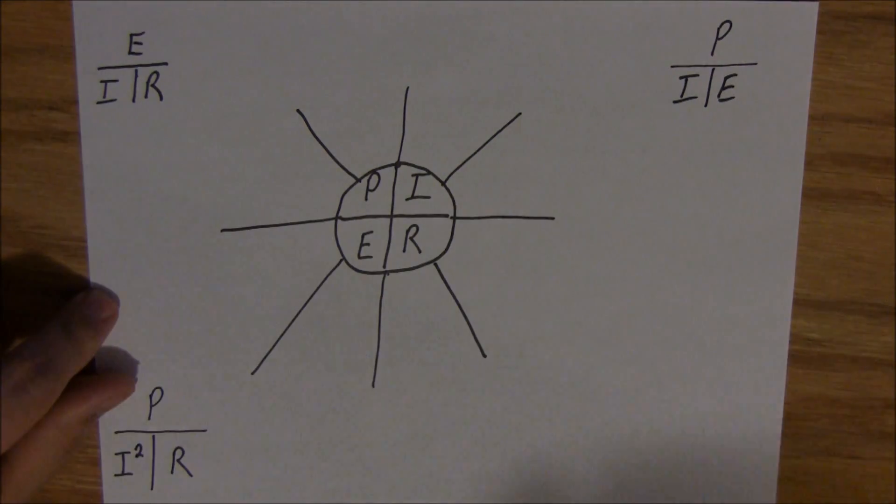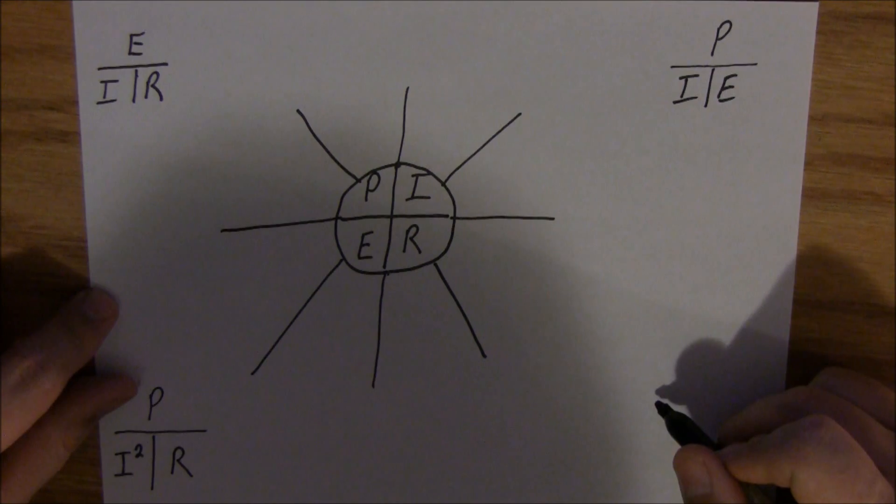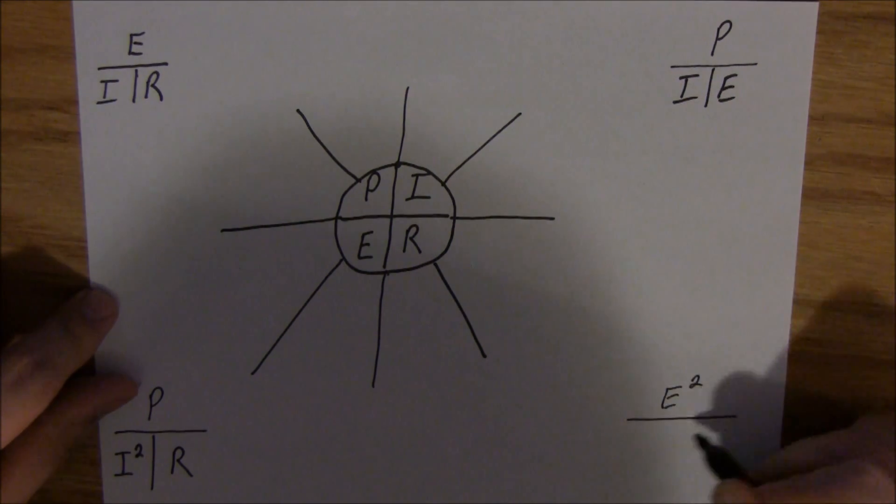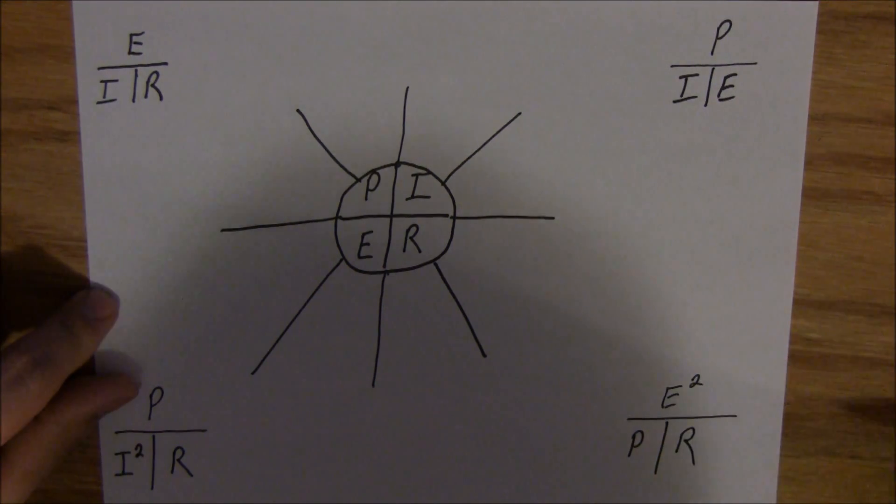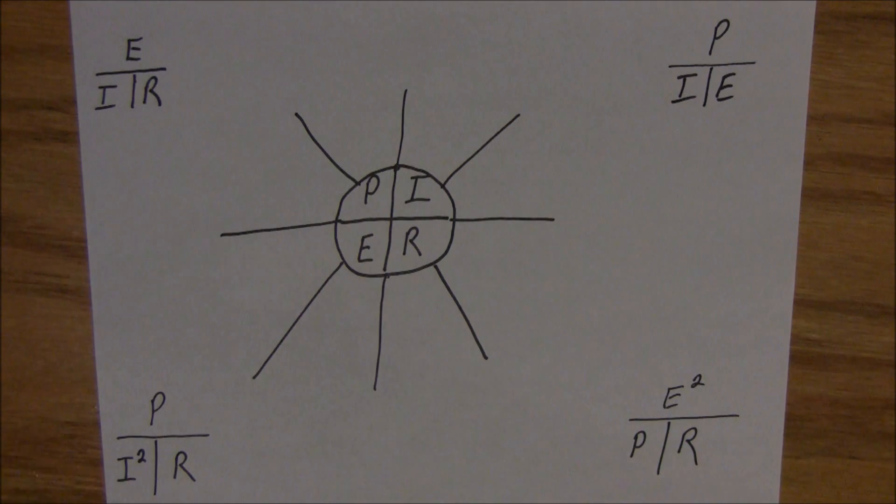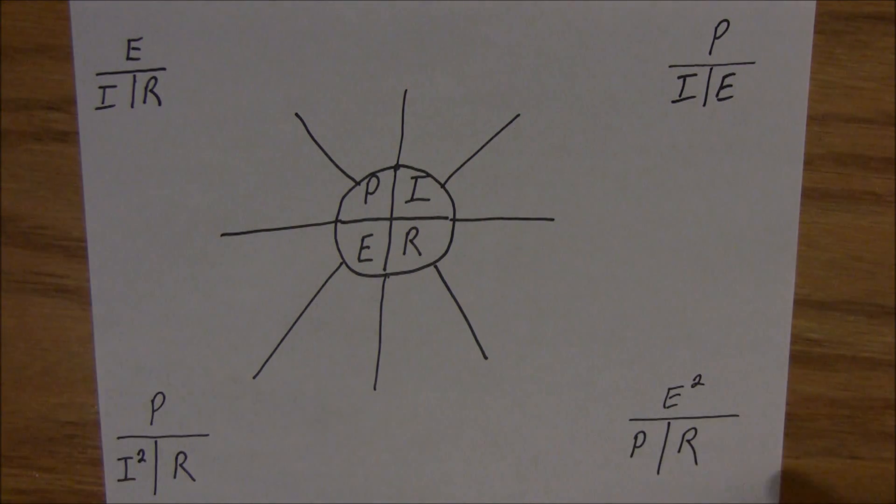And then the other one, I'm sorry, I can't come up with a mnemonic. It's just something you're going to have to remember. You've got E squared over PR. If you can remember those four, you can remember all of Ohm's law. Ear, pi, Peter. And then you have to remember E squared over PR.